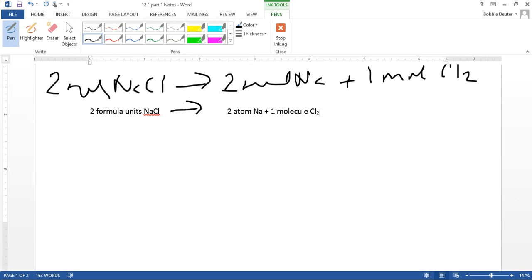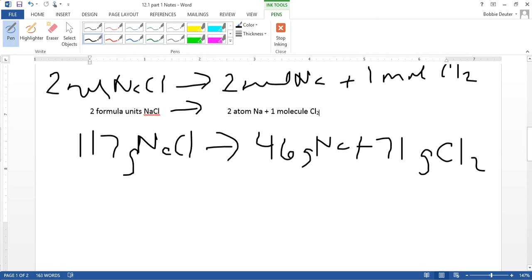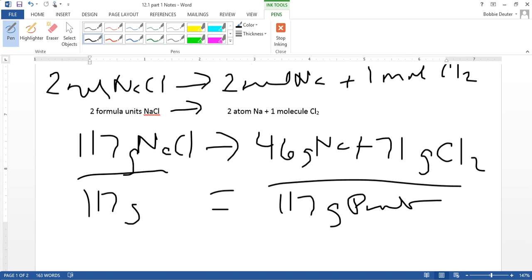So now let's write this in terms of mass. If we take sodium chloride, we have 117 grams of NaCl, produces 46 grams of sodium, plus 71 grams of chlorine gas. And so let's again make sure that it follows the law of conservation. So we have 117 grams of our reactant, equal to 117 grams of our product. These are kind of like the check - yeah, they have to equal each other. So make sure that you do set those equal.